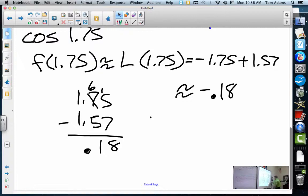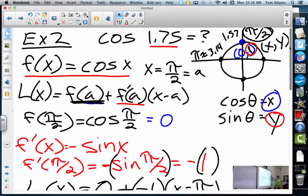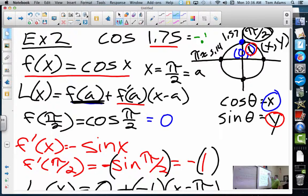So what did Mr. Adams do? Well, I said, using all this complicated stuff, that basically cosine of 1.75 is approximately negative 0.18. And I didn't use a calculator. I just used my brain.